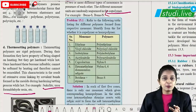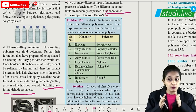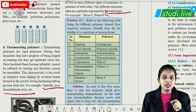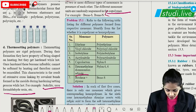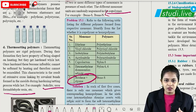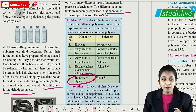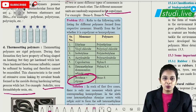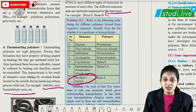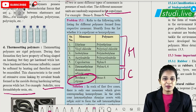In problem 15.1, they give you a question to classify polymers. Given the monomer and polymer name, you need to tell which are homopolymer and which are copolymer. For example, Buna-S is formed by two types of monomers — it's a copolymer. Others formed by only one type of monomer come under homopolymer examples.